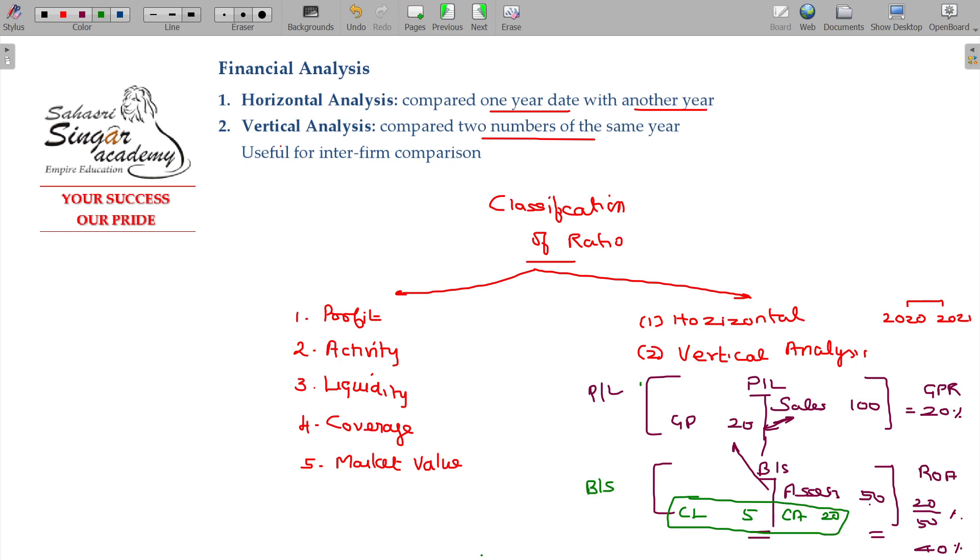If we take two numbers, both numbers from the balance sheet, that is the balance sheet ratio. This part is vertical analysis. Predominant ratio analysis is vertical analysis, but in practical life, they will use the horizontal analysis also for the company's growth.